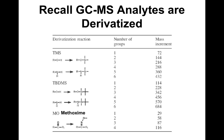There are other derivatization agents — TBDMS and methoxime (MO) are common ones, each adding certain masses. When looking at GCMS, remember that most compounds are derivatized, so masses will not match the pure compound — they must match the derivatized compound.